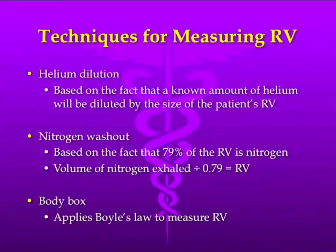If we can't measure residual volume directly, how do we do it? We have to have some mechanism by which we measure it indirectly. There are three ways of doing it, and I'll explain briefly each of those.